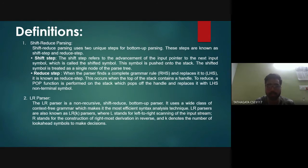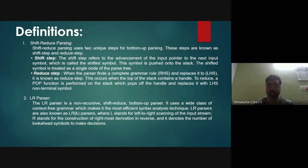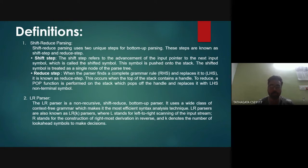LR parsers read input from left to right and produce a rightmost derivation. They are called bottom-up parsers because they reduce top-level grammar productions by building up from the leaves. The LR parser is the most powerful deterministic parser, and its parsing table is divided into two parts: the action table and the goto table. The parsing table structure differs for each parser variant.